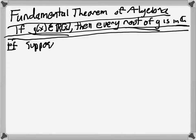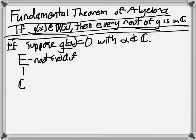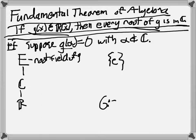We're going to suppose that we have a root of g(alpha) with alpha not in the complex numbers. So we're going to go by contradiction, and then we're going to look at an extension here, where this is a root field, or splitting field, of g. We're going to be looking at a stack of fields like this. We're going to have the Galois group — remember by the Galois correspondence — we're going to have G equal to the Galois group of E over R. And this extension will be Galois, because we have a splitting field, so it's going to be normal.